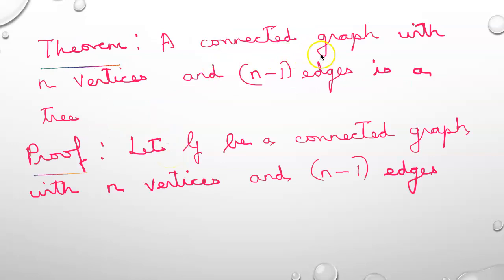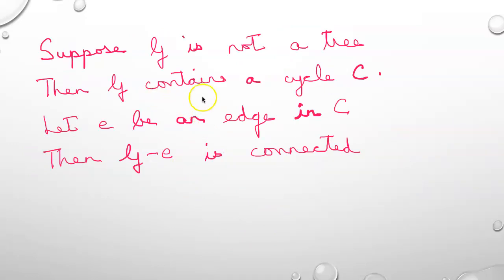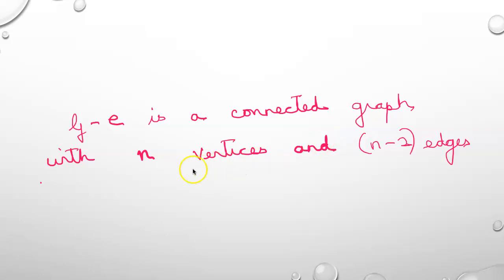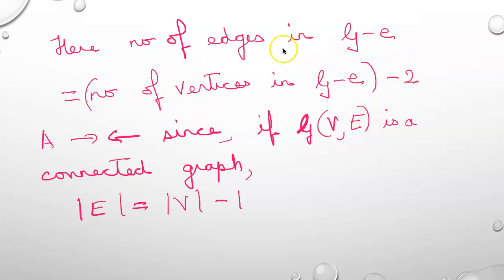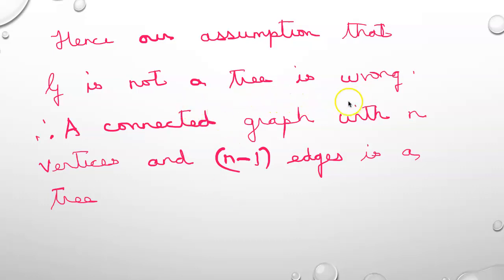Next theorem: prove that a connected graph with n vertices and n-1 edges is a tree. Let G be a connected graph with n vertices and n-1 edges. Suppose G is not a tree, then G contains a cycle, say C. Let e be an edge in C. Then G-e is connected because we are removing one edge from the cycle. So G-e is a connected graph with n vertices and n-2 edges. This is a contradiction because if G is a connected graph, the number of edges must equal the number of vertices minus 1. So our assumption that G is not a tree is wrong, and hence a connected graph with n vertices and n-1 edges is a tree.